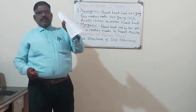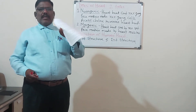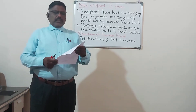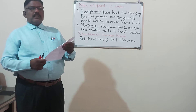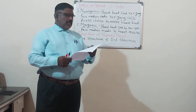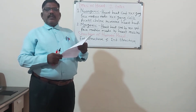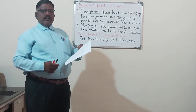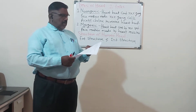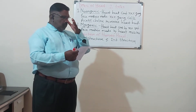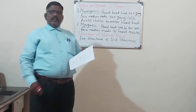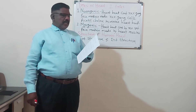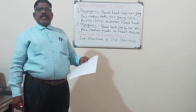This is our new syllabus. In unit one, there are three chapters: digestion, vitamins, and respiration. These three chapters are already completed, so unit one is done. Unit two has started, and in unit two, the first chapter — excretion — is also completed. The second chapter, cardiovascular system, we are studying now.